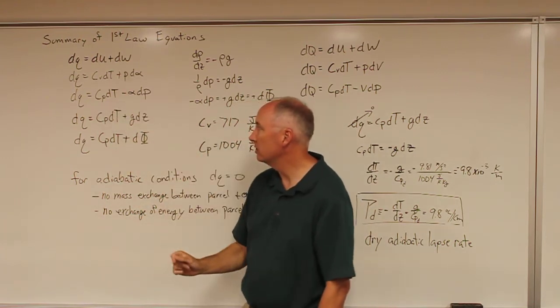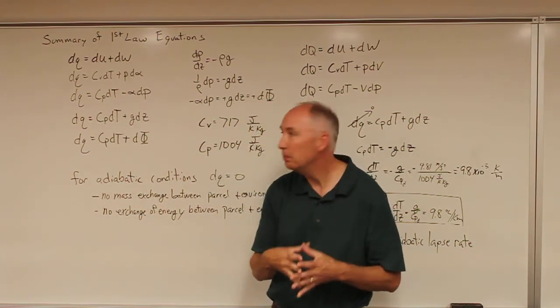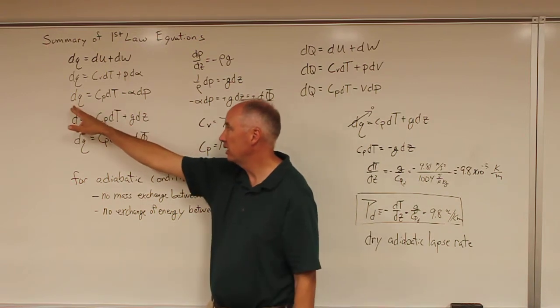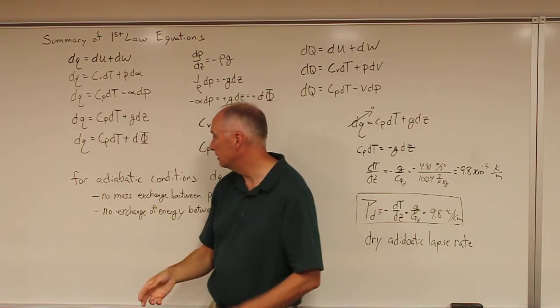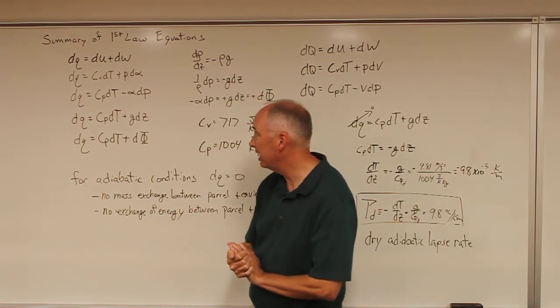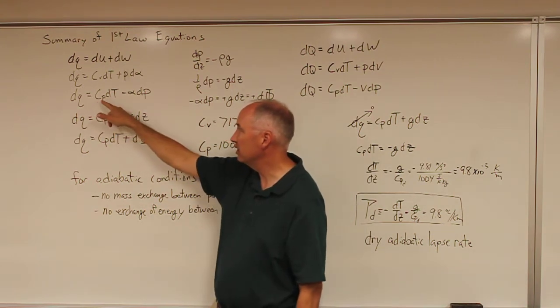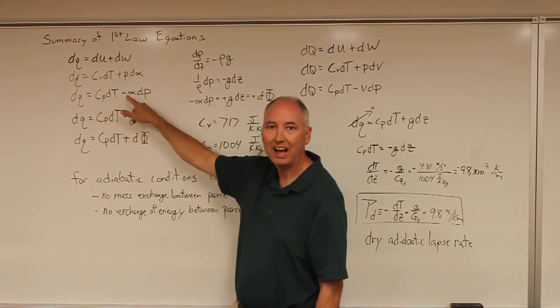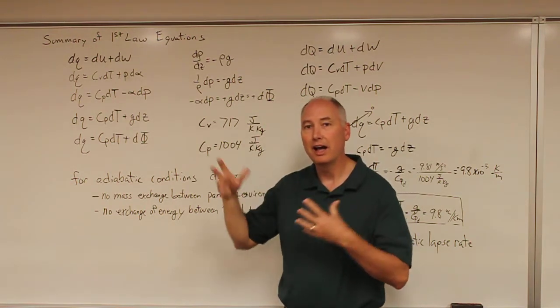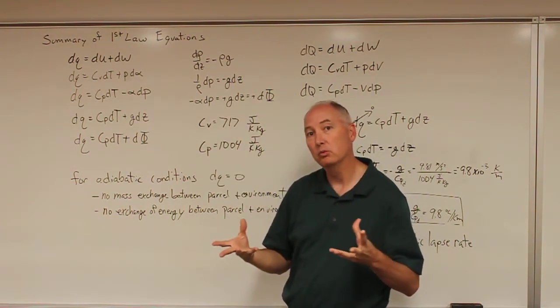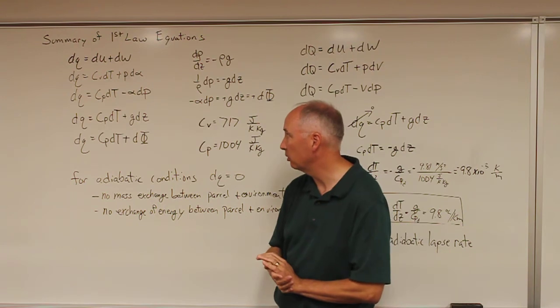And then we also transformed this using the concept of enthalpy to say that the change in the adiabatic heating in this case is equal to the enthalpy minus alpha dp. And we did that to have a form of the equation that would be nice to work at under constant pressure.